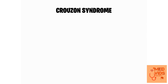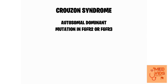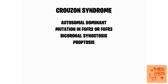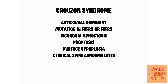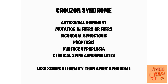A similar syndrome is Crouzon syndrome, which is also an autosomal dominant condition caused by mutation in FGFR2 or FGFR3 (fibroblast growth factor receptors). It also involves bicoronal synostosis, leading to brachycephaly, proptosis, and mid-face hypoplasia. Crouzon syndrome may also be associated with cervical spinal abnormalities in some cases. Importantly, Crouzon syndrome causes less severe deformity than Apert syndrome — features like syndactyly may not be present at all.